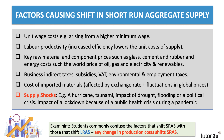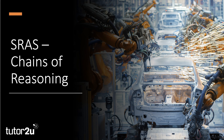An important exam hint: many students commonly confuse the factors that shift short-run aggregate supply with those that shift long-run aggregate supply — they are different. Any change in production costs in the short term will shift short-run aggregate supply. In the next video, I want to take you through a couple of examples of how to build a chain of reasoning to explain a shift in SRAS. I hope you found this video useful.